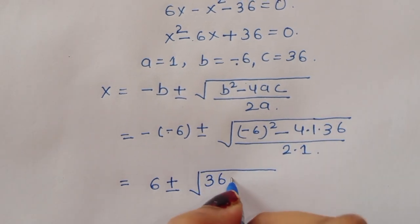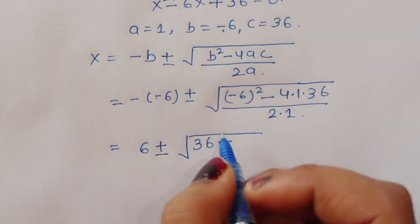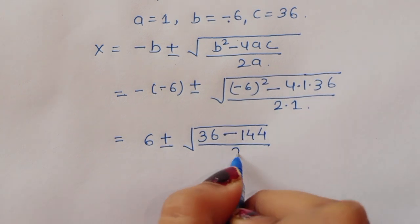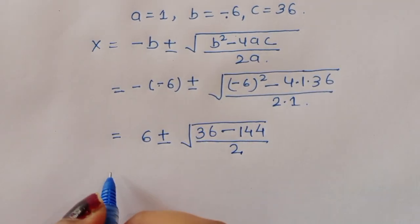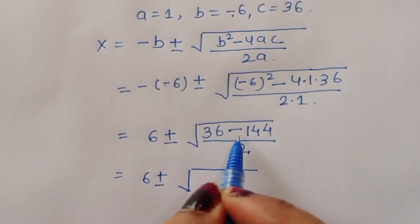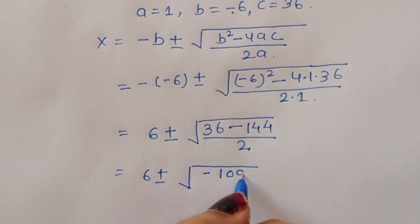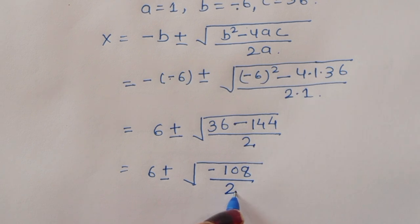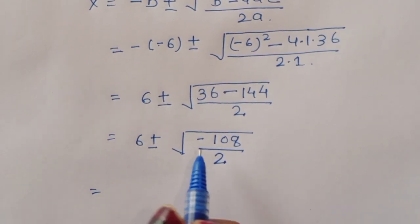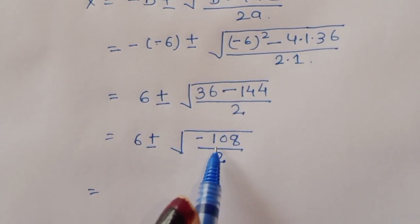Continuing the calculation: divided by 2 times a, which is 1. This gives 6 plus or minus the square root of (36 minus 144), divided by 2. That equals 6 plus or minus the square root of minus 108, all divided by 2.